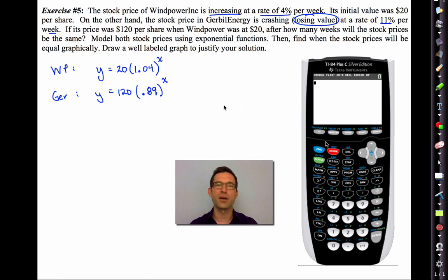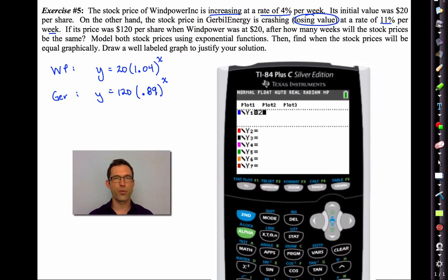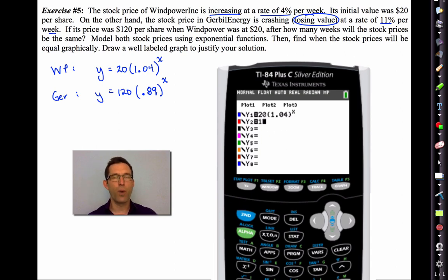And no calculator. Plenty of room this time. Let's go into Y equals. And let's clear out the equations from the last problem, or equation. Now in Y1, I'm going to enter in that function for the wind power. So I'm going to put in 20 times 1.04 raised to the X. Make sure that one looks good. Hit enter. Now let's do gerbil energy. 120, parentheses, 0.89, parentheses, raised to the X. Enter. Again, what we want to do is just take a moment, look at it, make sure it looks right, make sure both are correct.